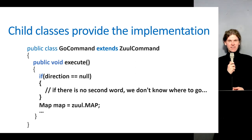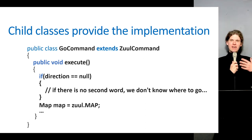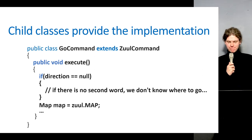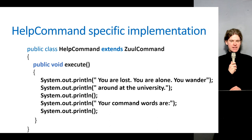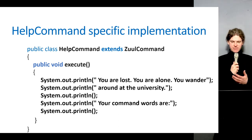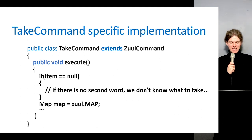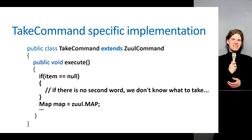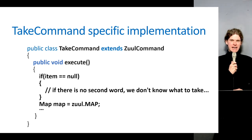That abstract method is implemented in a way specialist to GoCommand. In the HelpCommand there's a specific implementation of execute that just prints out different help and hints. In TakeCommand as well. If you want to create another command, you might want to implement another child class which overrides and provides the implementation for the execute method.